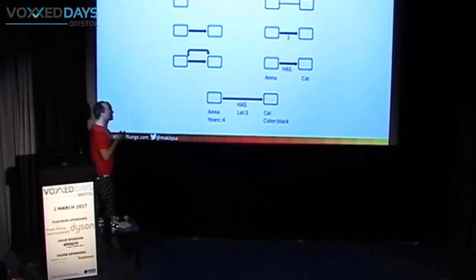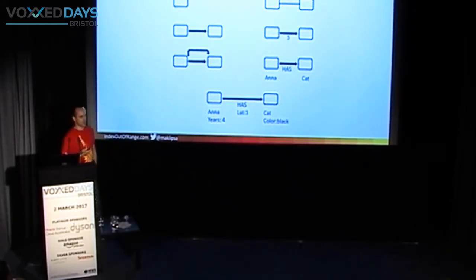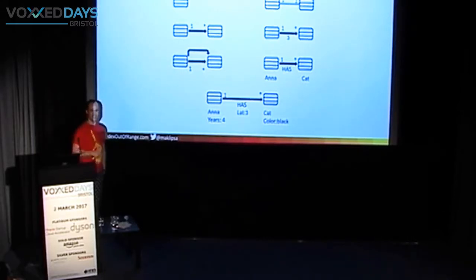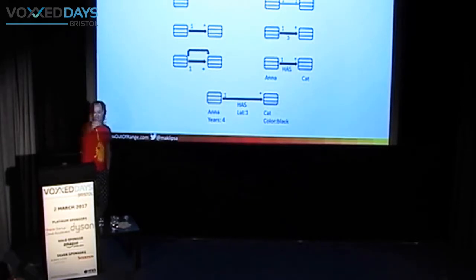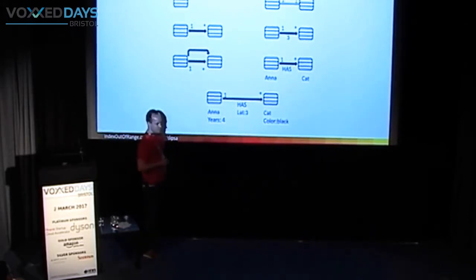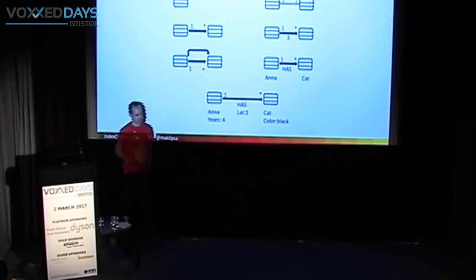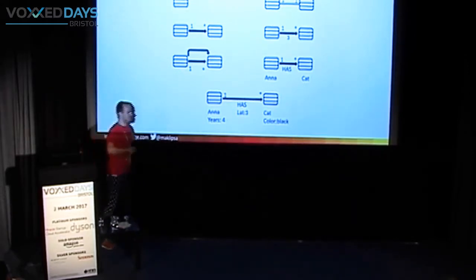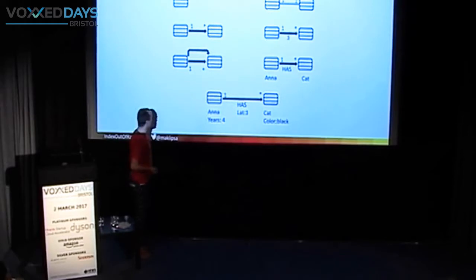Now I have a question: does this remind anyone of anything? So there's a guy talking about graph databases, but graphs are about relations, and we have relational databases — so what's up? Well, actually, graph databases are quite the opposite of relational databases. To understand why, let's look at some history.